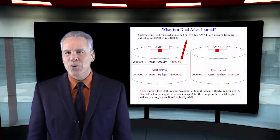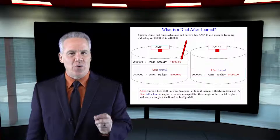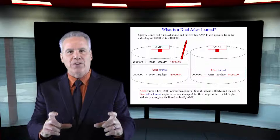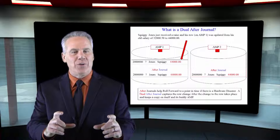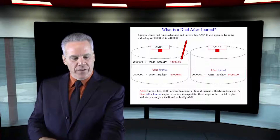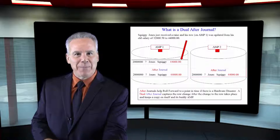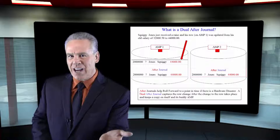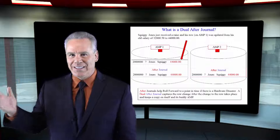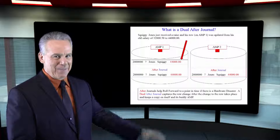A dual after journal actually stores two after pictures of the row being changed. One of those pictures is on the same amp that made the change, and another picture is on its buddy amp.